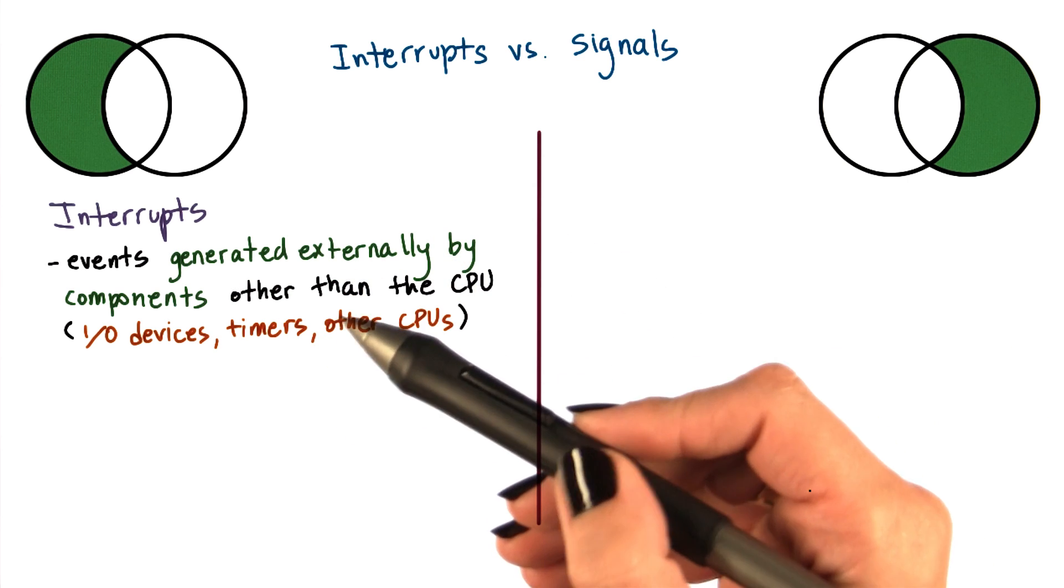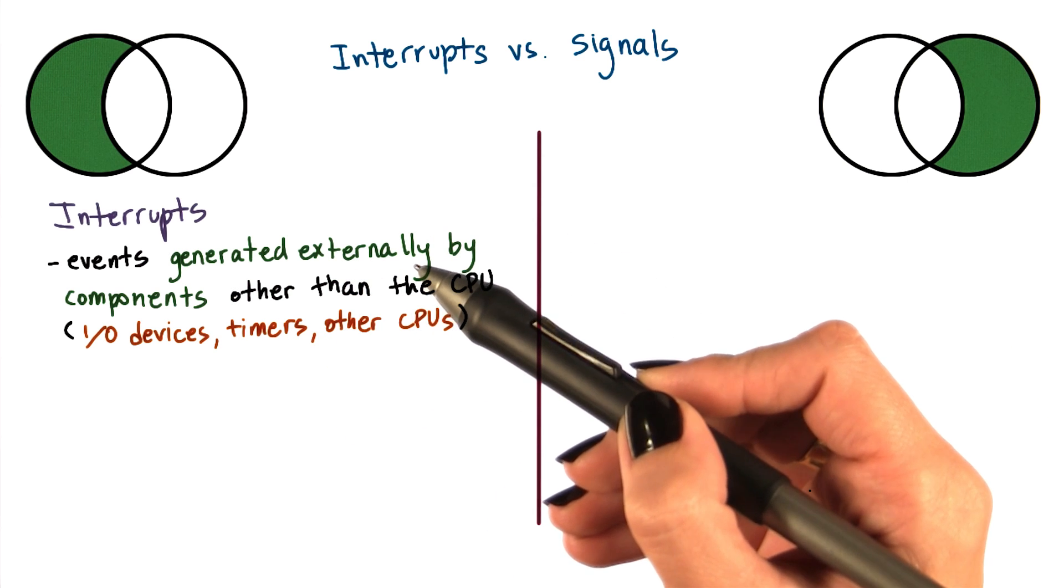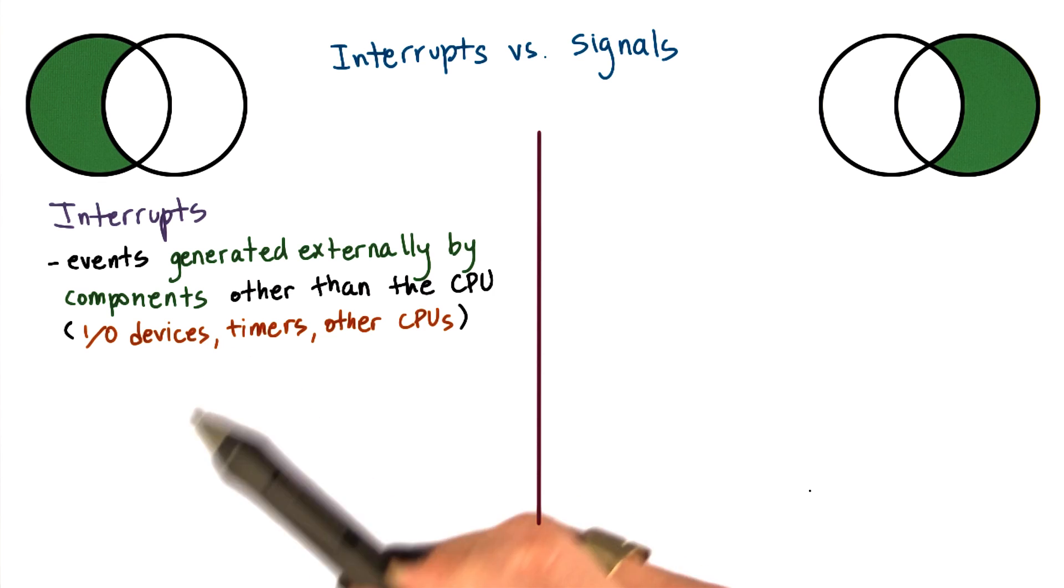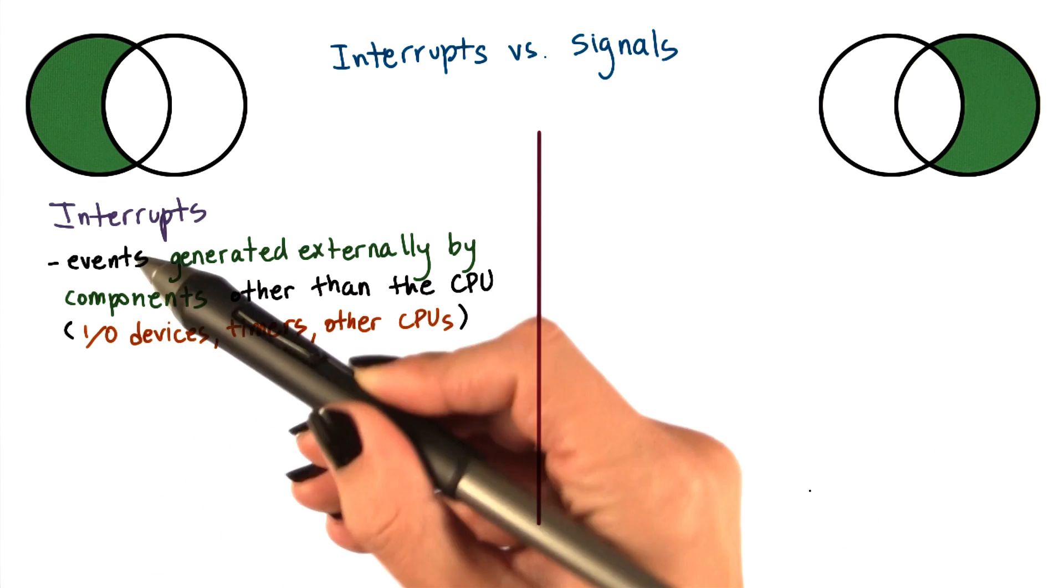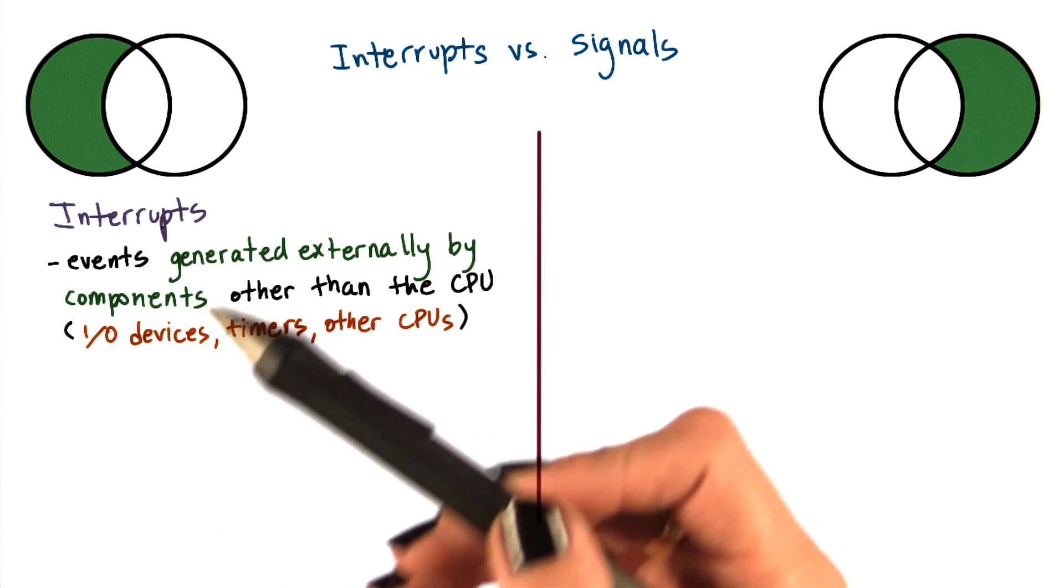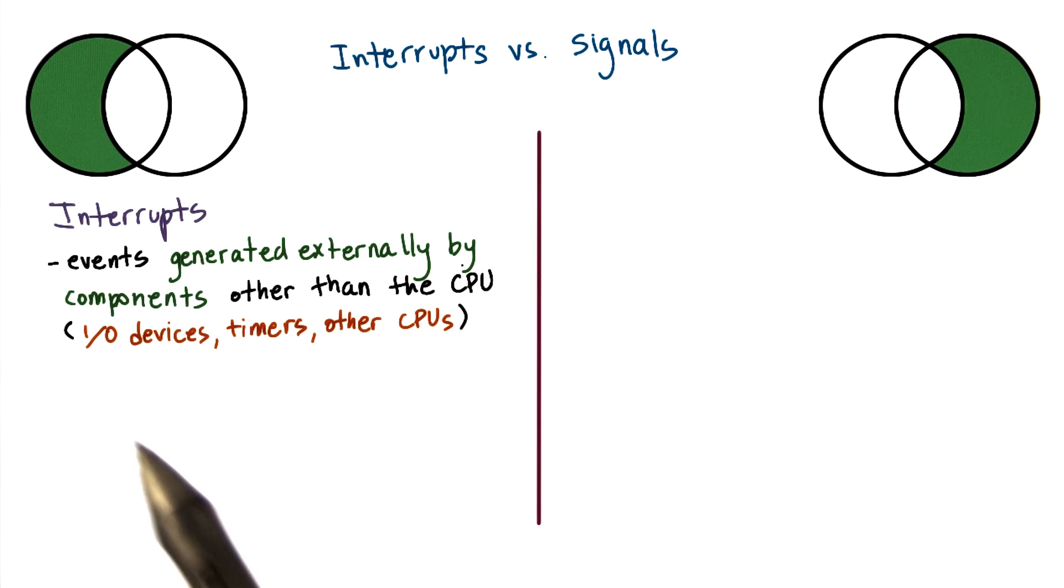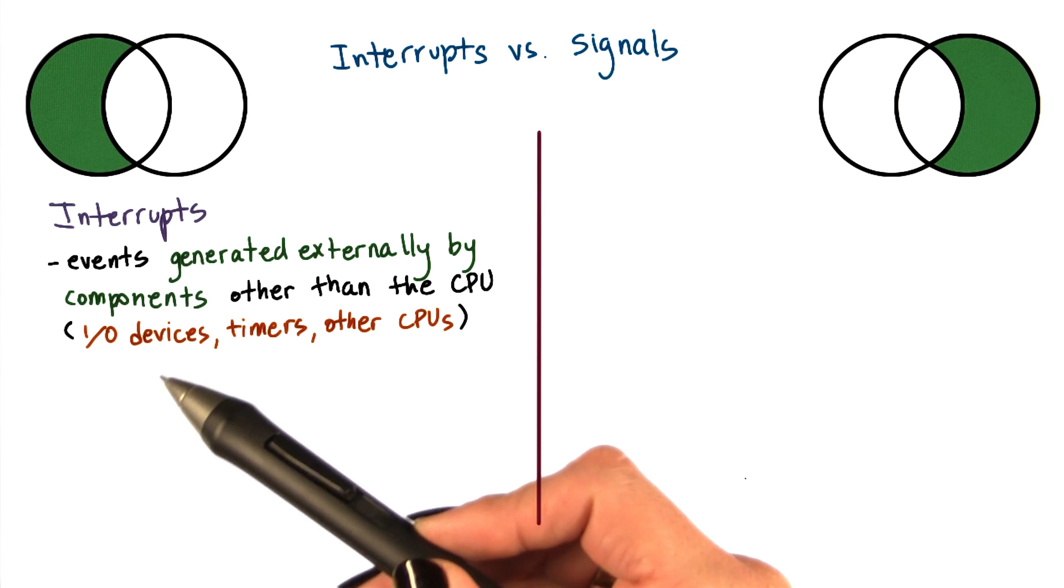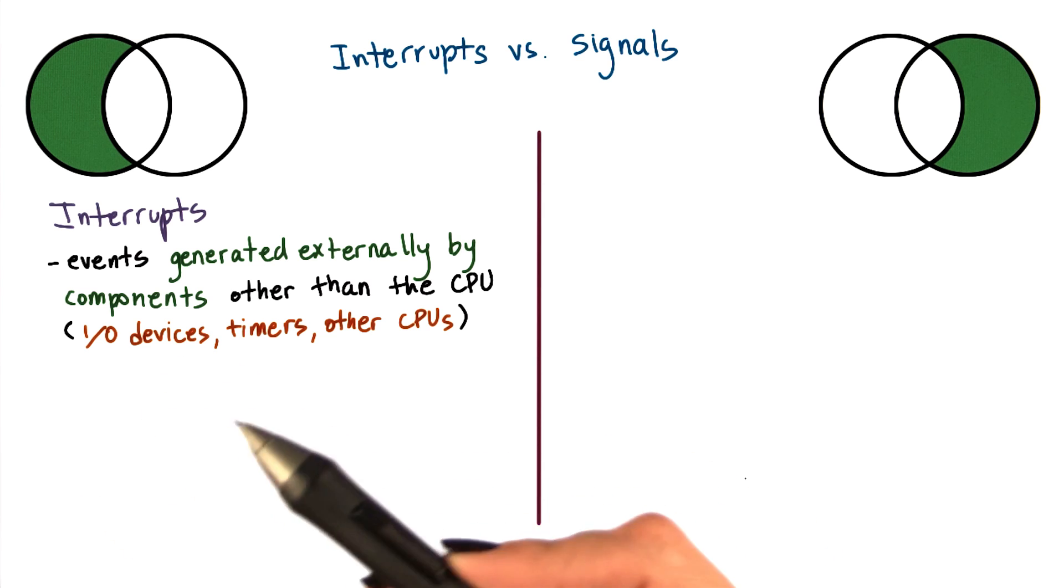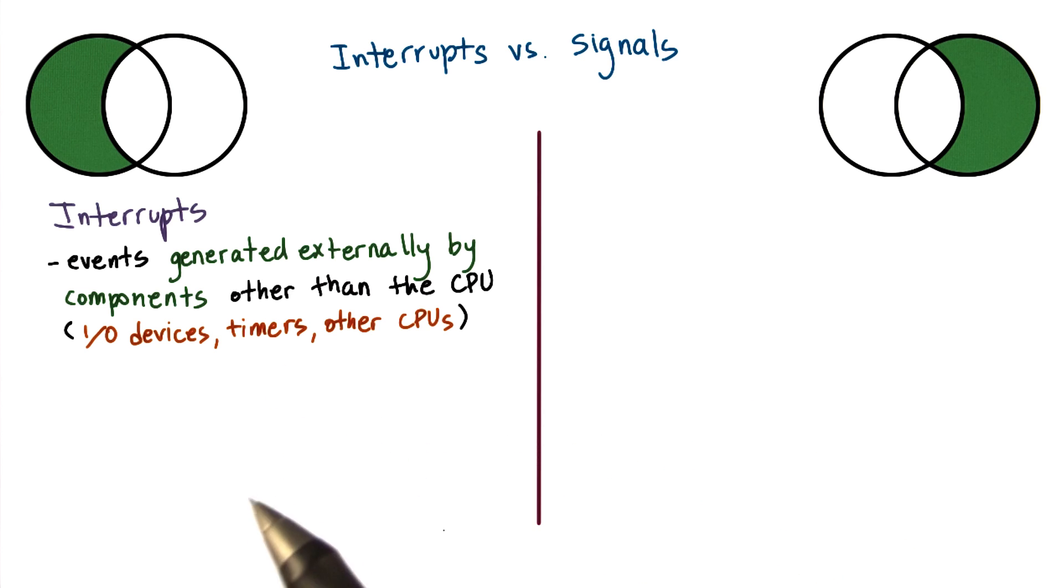Interrupts are events that are generated externally to a CPU by components other than the CPU where the interrupt is delivered. Interrupts represent basically some type of notification to the CPU that some external event has occurred. This can be from I/O devices, like a network device delivering an interrupt that a network packet arrived, or from timers notifying the CPU that a timeout has occurred, or from other CPUs.